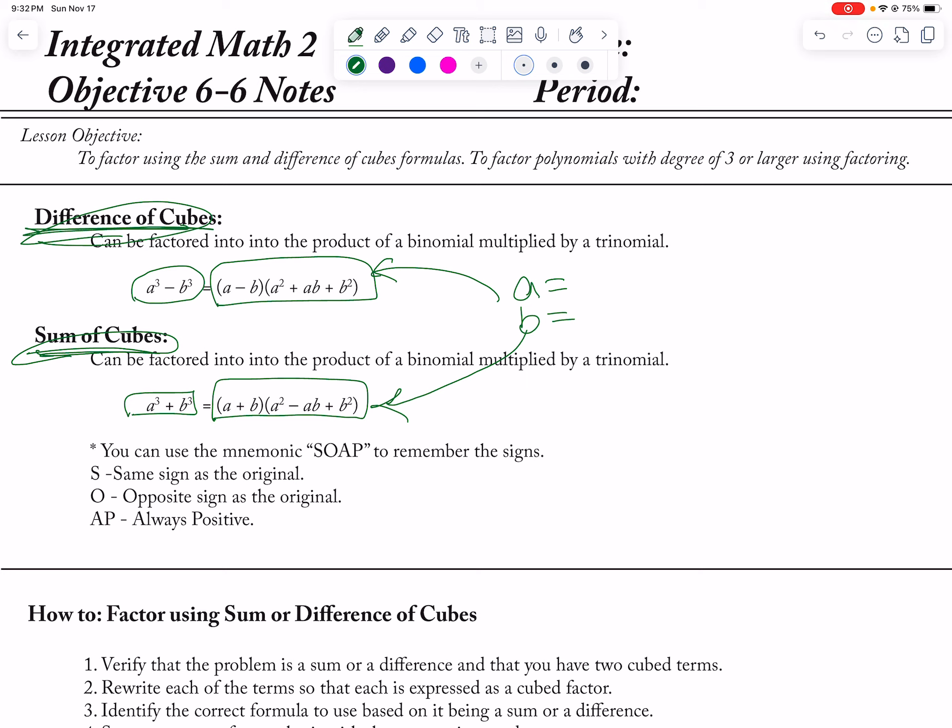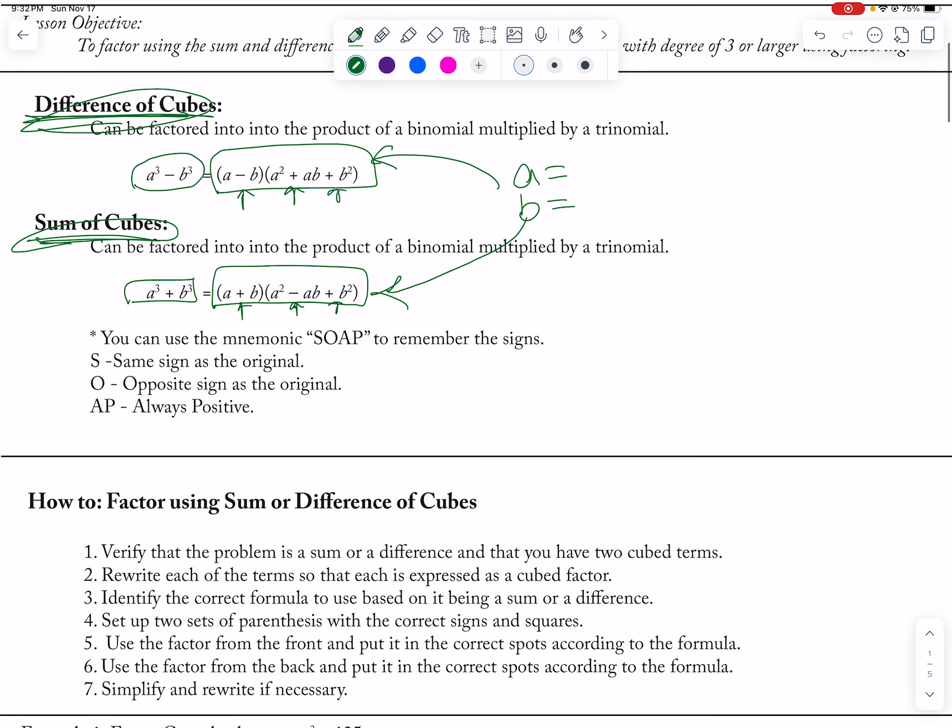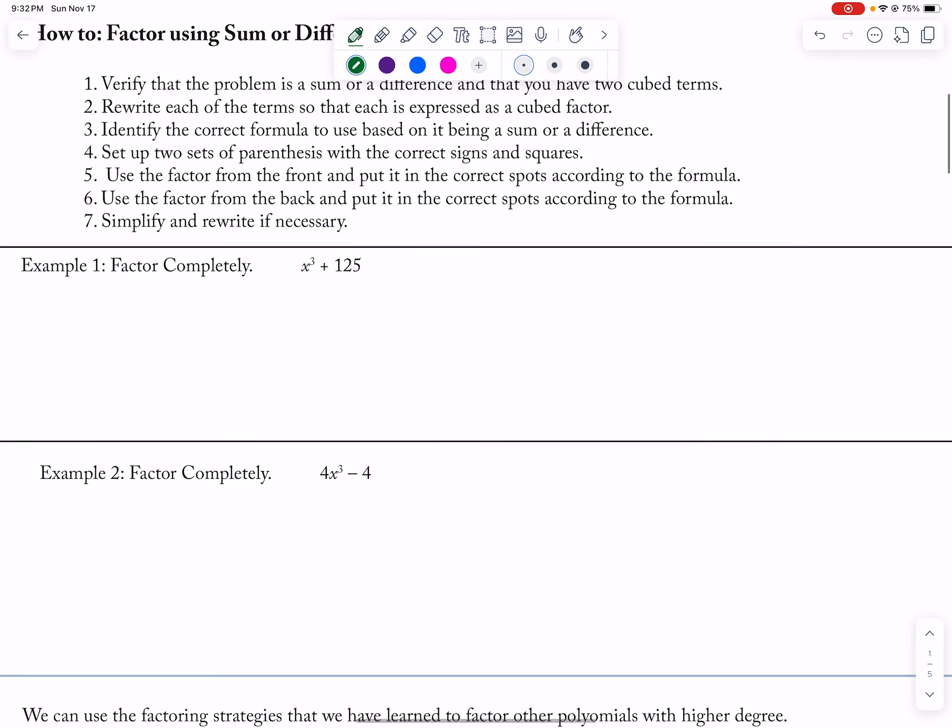What you notice for the sum of cubes is that it goes positive, negative, positive, and the difference of cubes goes negative, positive, positive. So here, there's a step-by-step again on how to do it if you want.